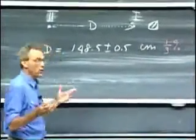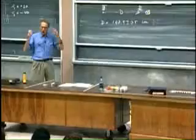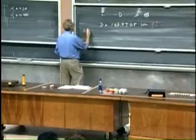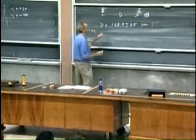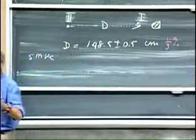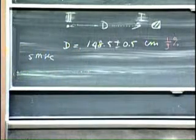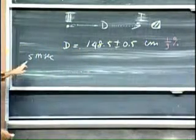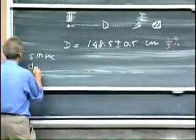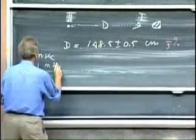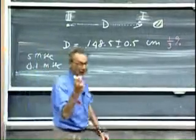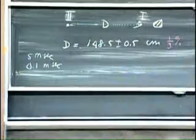Let us assume that the speed is 300 meters per second, just a wild guess. Then it would take five milliseconds for this bullet to cross from here to here. And if I want to make a measurement to two percent accuracy, I have to know this timing to about one-tenth of a millisecond, because one-tenth of a millisecond is about two percent of five.